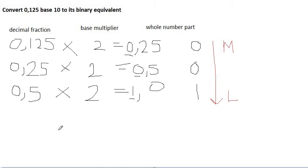So our answer in this case will be equal to 0.001 in base 2. So converting 0.125 in base 10 to its binary equivalent, our answer is 0.001 in base 2.